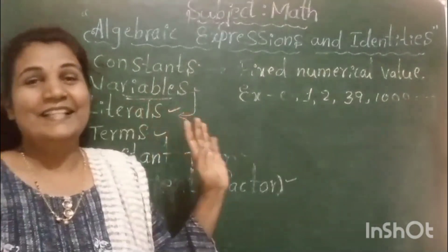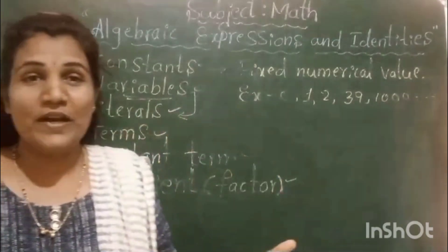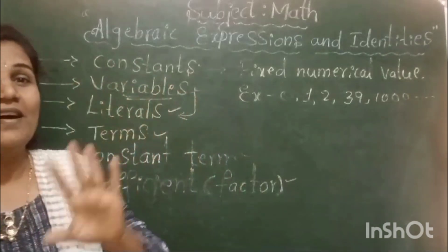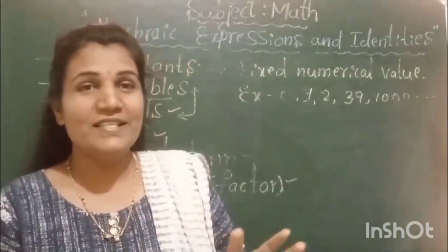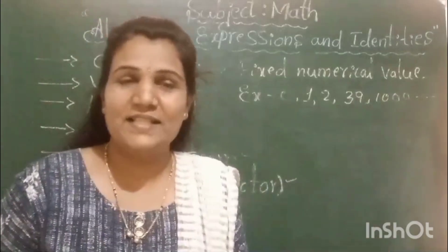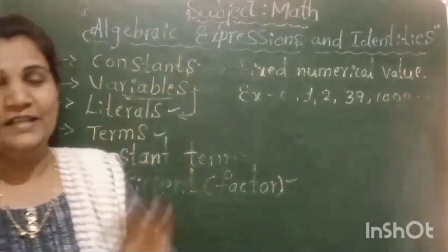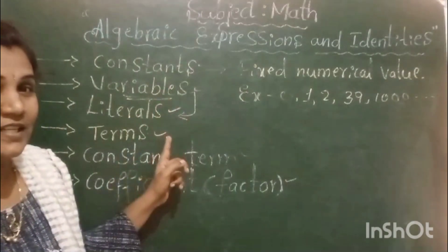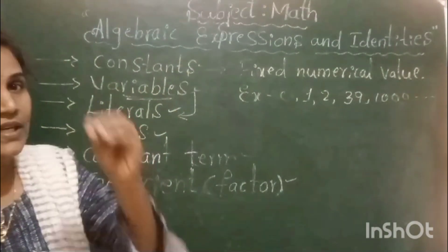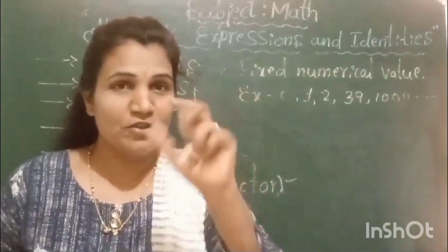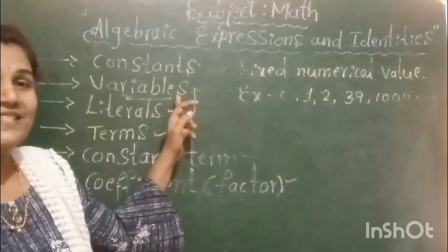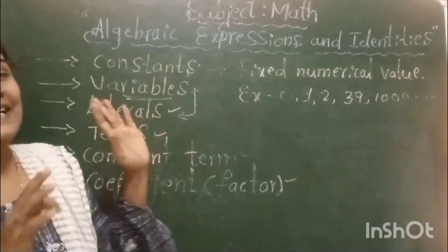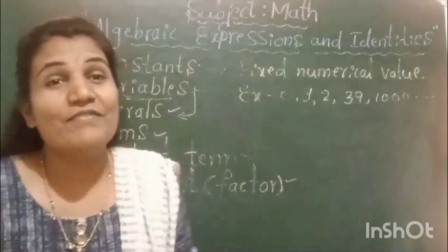What is the meaning of literal? A literal is an unknown quantity that is represented by alphabets. You can take any alphabet from A to Z — that is called a literal. So variables are represented by literals, and a literal is an unknown quantity represented by alphabets.